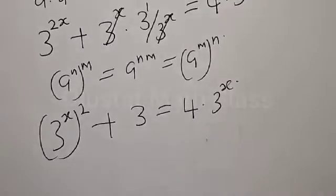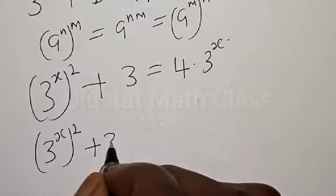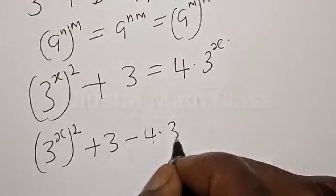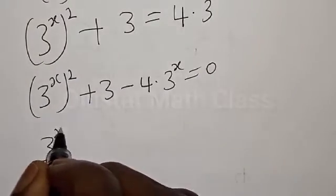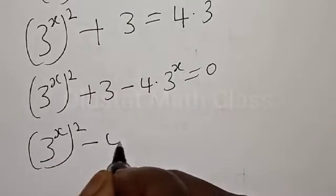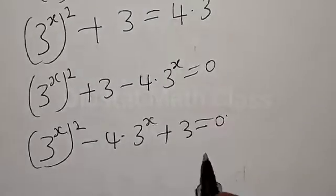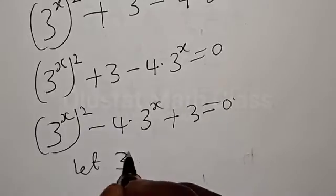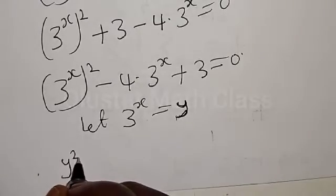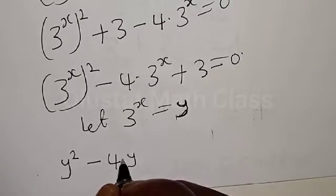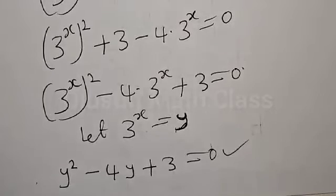Now let's equate everything to zero: we have 3 raised to power x all squared plus 3 minus 4 multiplied by 3 raised to power x is equal to 0. Rearranging: 3 raised to power x all squared minus 4 multiplied by 3 raised to power x plus 3 is equal to 0. Now let 3 raised to power x equal y, therefore we have y squared minus 4y plus 3 is equal to 0. This is a quadratic equation.